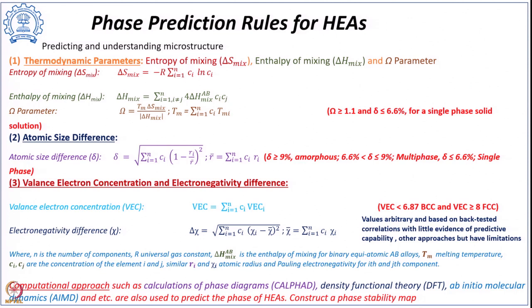Predicting and understanding the microstructure of high entropy alloys is very important, and for that the phase stability of these alloys is considered. It is calculated using different approaches like the computational approach where phase diagrams are calculated using CALPHAD software, or using density functional theory or ab initio molecular dynamics studies, all used to predict the phases present in HEAs.